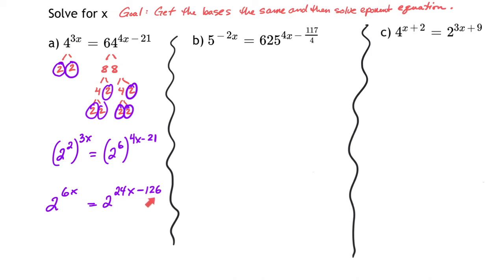Since the bases are the same, the exponents have to be the same. I'll focus on just the exponent part of the equation: 6x equals 24x minus 126. To get x alone, I'll subtract 24x from both sides.